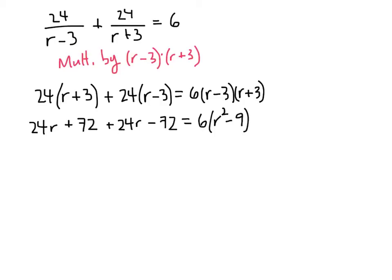On the left-hand side, 72 cancels with minus 72. 24r plus 24r is 48r. And then on the right-hand side, we have 6r squared, and then 6 times 9 is 54.